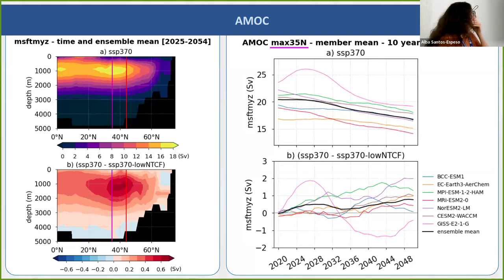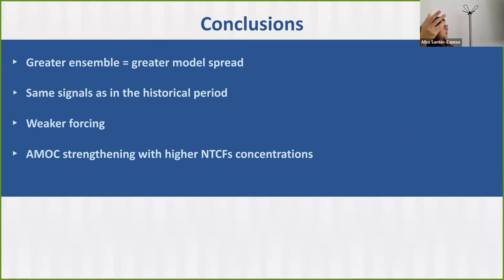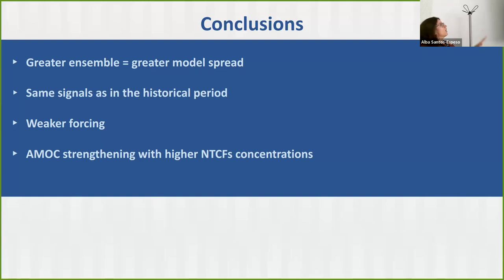The conclusions from the future analysis are: having a greater model ensemble strengthens confidence in results even as it introduces more model spread — different models represent different processes, and we can learn from that. We detect the same signals as in the historical period — the inter-hemispheric radiation imbalance and increased convection in the Labrador Sea — but with a weaker signal and weaker forcing, because there are smaller differences in near-time climate force concentrations between the simulations. Focusing on the AMOC, we report a strengthening of the AMOC when near-time climate force concentrations are higher.